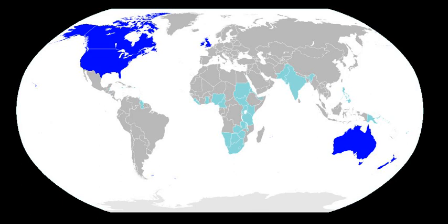Countries with large communities of native speakers of English include Britain, the United States, Australia, Canada, Ireland, New Zealand, and South Africa. The countries with the most native English speakers are, in descending order: the United States, the United Kingdom, Canada, Australia, South Africa, Ireland, and New Zealand. In these countries, children of native speakers learn English from their parents, and local people learn English to communicate in their neighbourhoods and workplaces. Linguist David Crystal estimates that non-native speakers now outnumber native speakers by a ratio of 3 to 1.